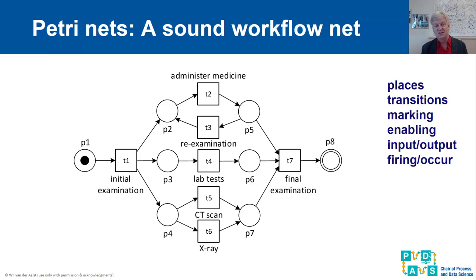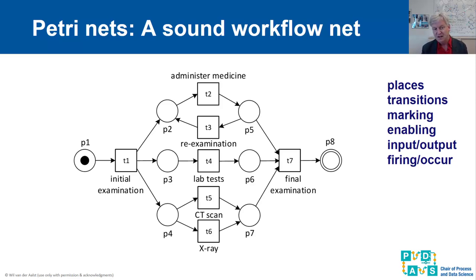This choice is independent of the occurrence of T4 and T2. Imagine that T2 fires, T4 fires, and T5 fires. Then T7 is enabled, because T7 requires a token on each of its input places. T7 then occurs and produces a token on the output place. Note that with T3 we can loop back. So a possible execution would be T1, T2, T4, T5, T3, T2, T3, T2, T7, leading from the marking with a token in P1 to the marking with a token in P8.